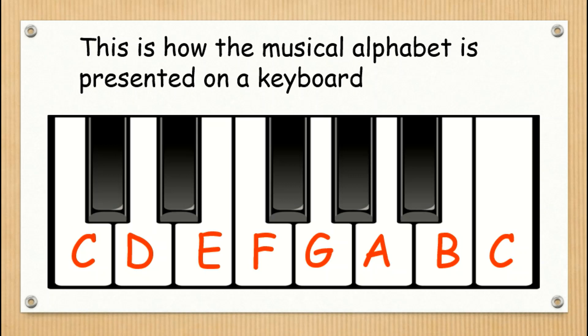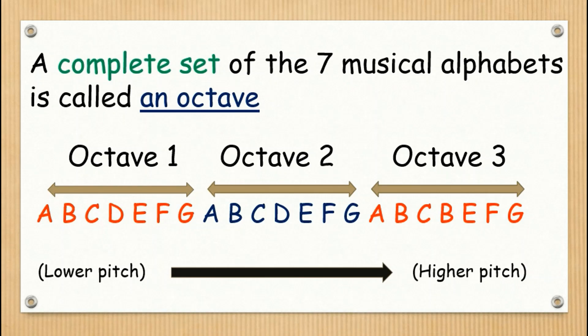Let's expand more. A complete set of the 7 musical alphabets is called an octave. For example, octave 1, octave 2, octave 3. Octaves change from lower pitch to a higher pitch.